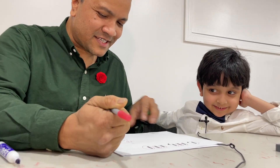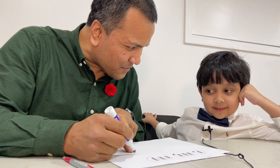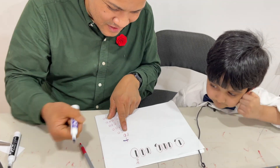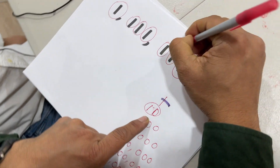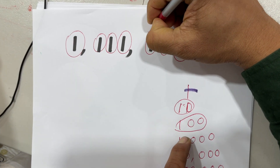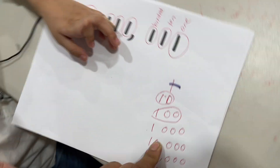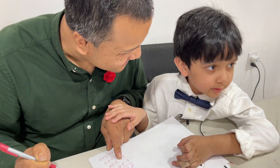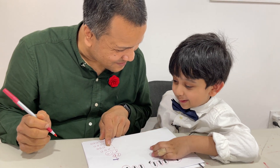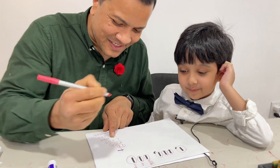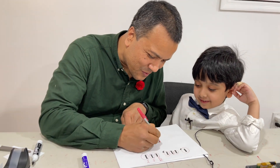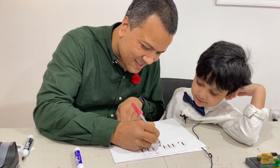Now let's write it down. What is the place value of this one? One. Good — we're going to write one over here. What is the place value of this one? Ten. We're going to write ten. What is the place value of this one? One hundred. We must say one hundred. What is the place value of this one? One thousand. Place value of this one is one thousand.